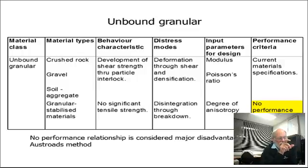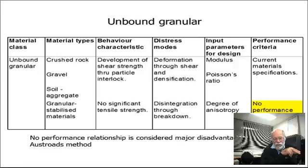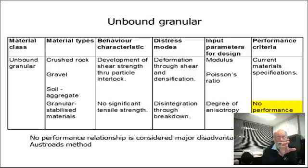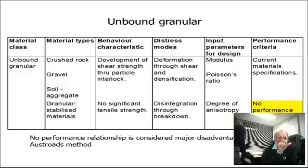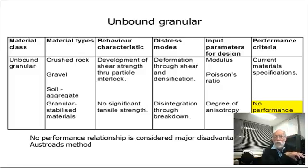If you're doing mechanistic design, you need a modulus value for these materials, a Poisson's ratio, and a degree of anisotropy. The performance criteria are simply that it meets the specification — that's all there is. In the Austroads method, for these materials, there is no performance relationship, which is interesting because you can determine performance characteristics of the asphalt and a performance relationship for the subgrade, but there is no relationship for the unbound granular materials. That's a pretty big weakness in the methodology.